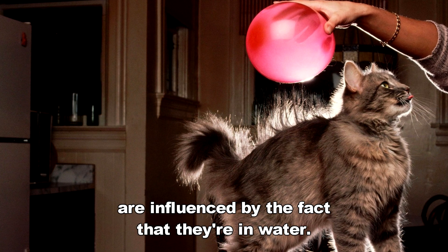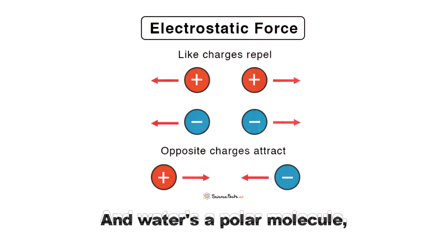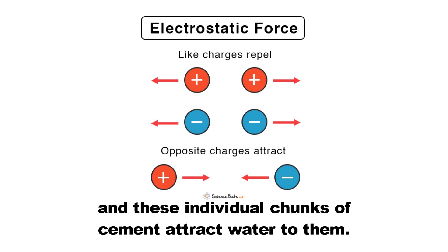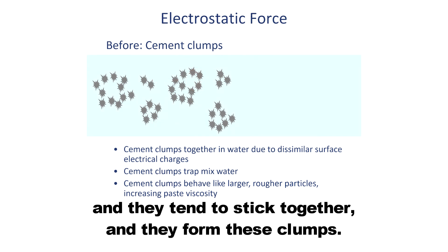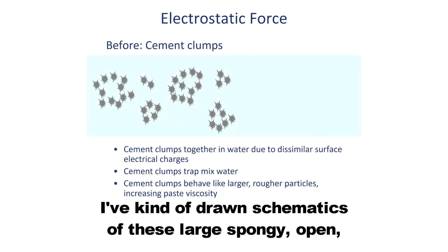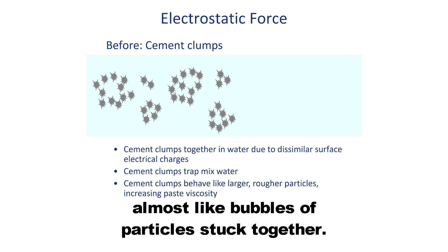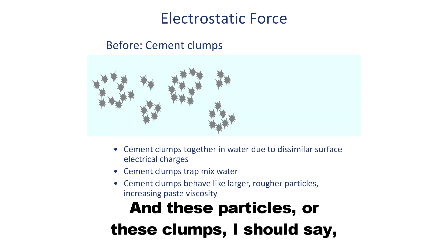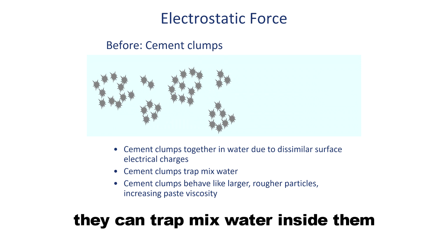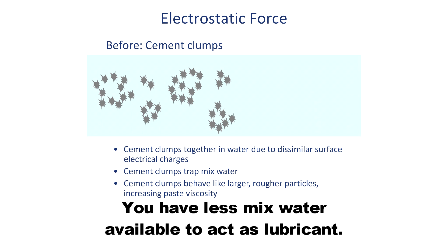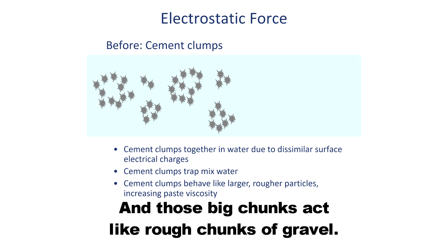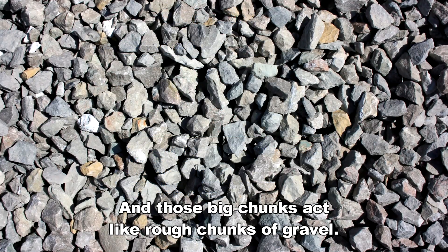All these little tiny particles are influenced by the fact that they're in water, and water is a polar molecule. These individual chunks of cement attract water to them, they get an electric charge, and they tend to stick together and form clumps. On the left side of the screen, I've drawn schematics of these large, spongy, open — almost like bubbles — of particles stuck together. These clumps can trap mixed water inside them, just like porous aggregate absorbs mixed water, giving you less water available to act as lubricant. And those big chunks act like rough chunks of gravel.